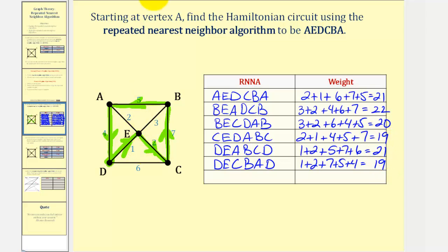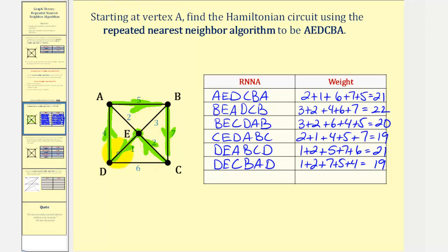Finally, starting at vertex E, the nearest vertex is D since edge ED has a weight of 1. From D, edge DA has a weight of 4 while DC has weight of 6, so we visit A. Then from A we go to B, then C, then back to E. The circuit is EDABCE with a total weight of 1 + 4 + 5 + 7 + 2 = 19.